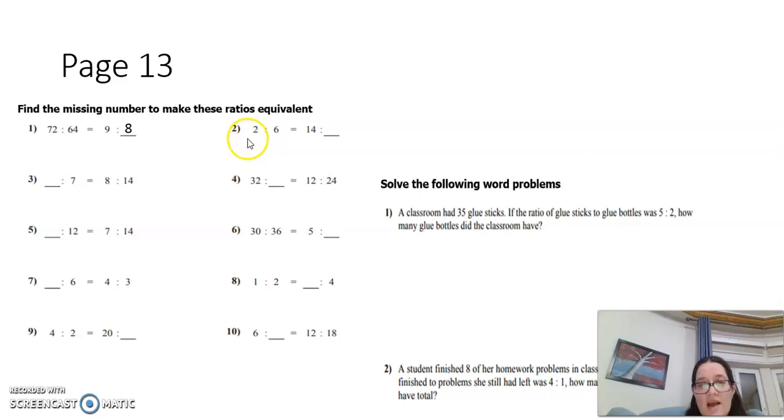2 to 6: how does the 2 become 14? It becomes 14 by multiplying the 2 by 7. So 2 by 7 is 14, 6 by 7 is 42.